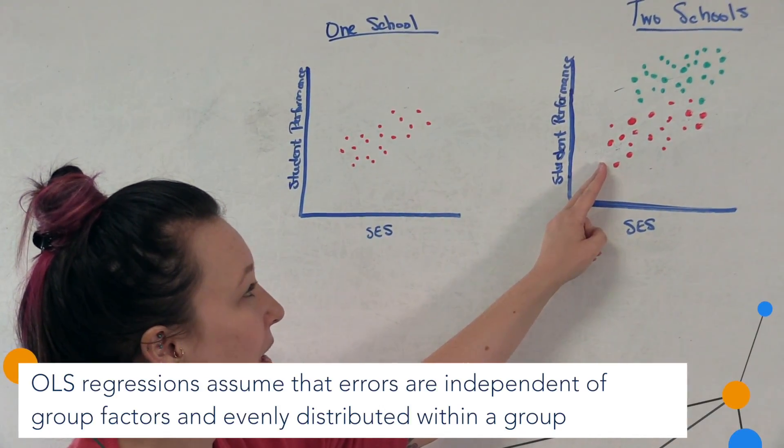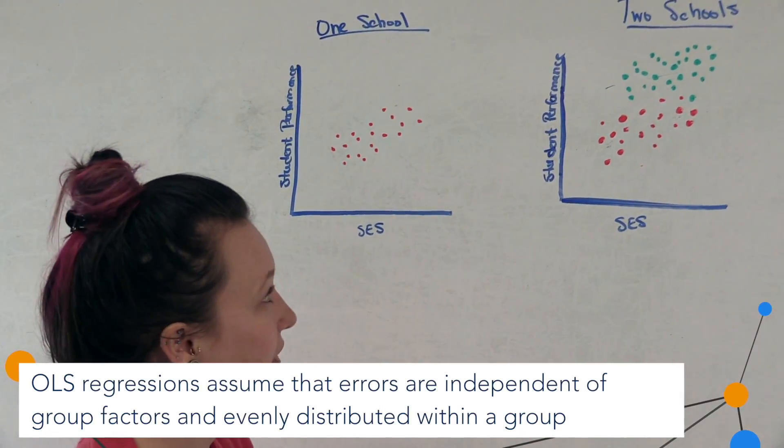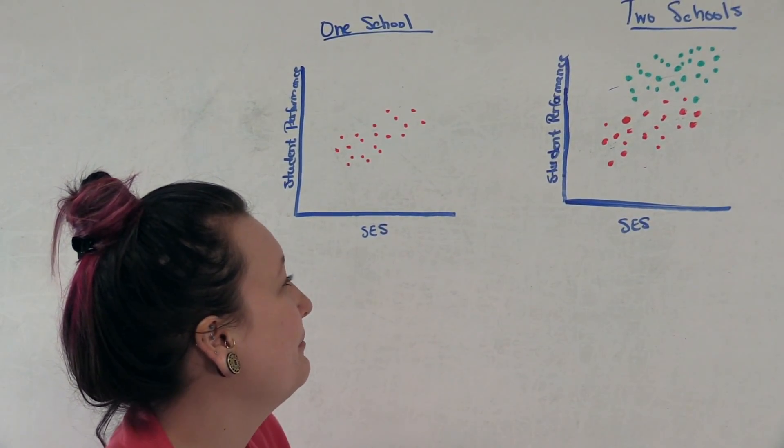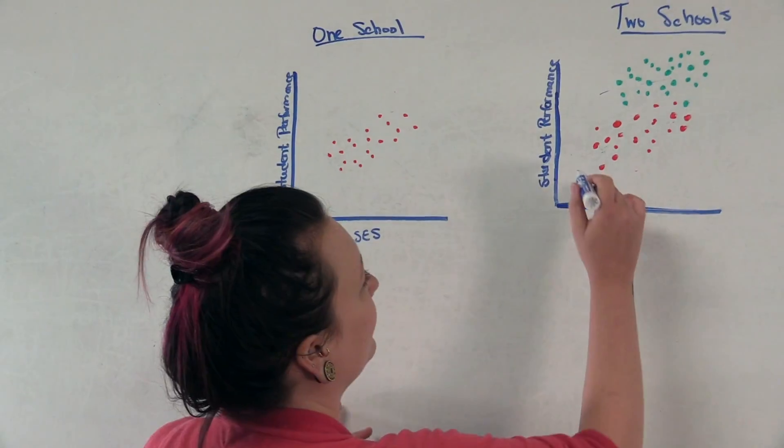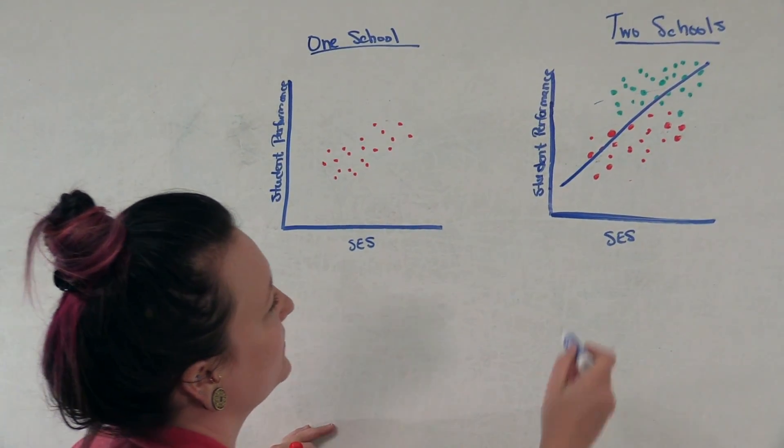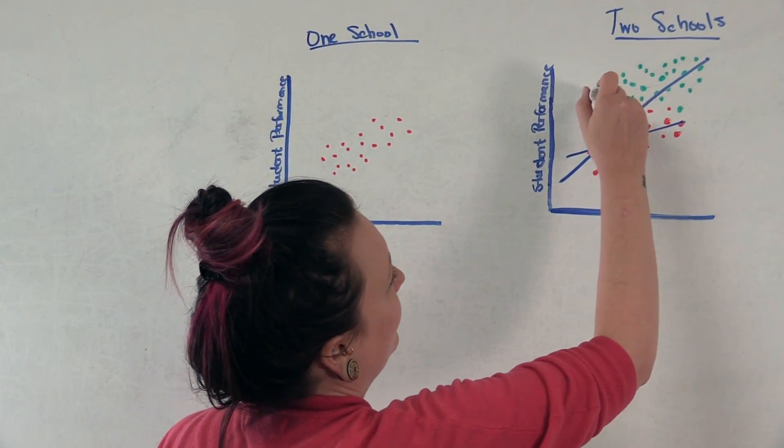If we think here about what the regression line might look like, we will see a positive relationship somewhat like this. However, if we looked in the two groups, it would look a little more like this.